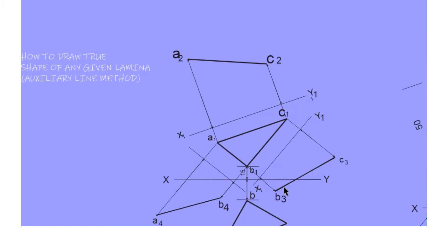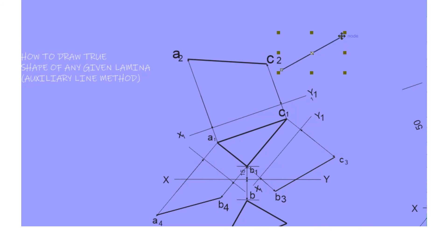You are taking the true length of side B3C3 — this side is C3 and this one is B3. Place your compass on point C2.